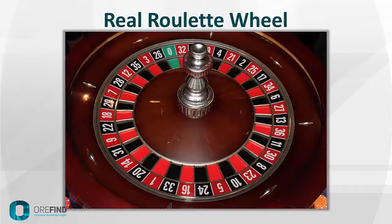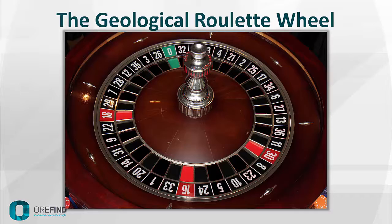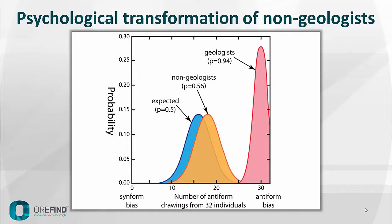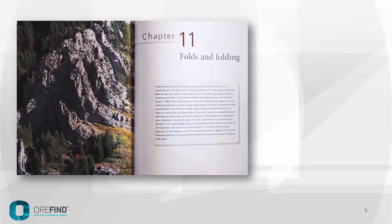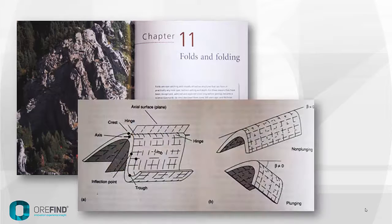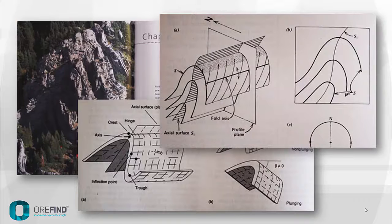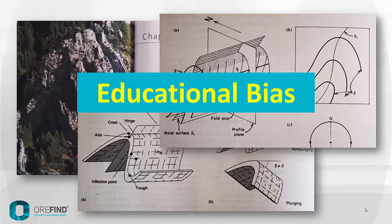A real roulette wheel looks like a fair distribution, but a geological roulette wheel looks very different — there appears to be a psychological transformation of non-geologists to geologists, as shown with this arrow. How does this occur? Well, if you look at textbooks in structural geology, what you will see is that when they introduce folds, they almost always show antiforms as illustrations. So I think there is an educational bias here.